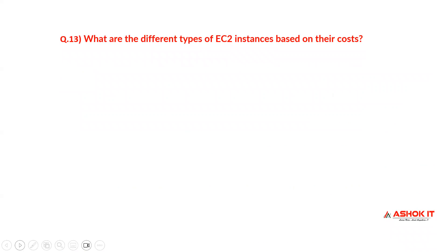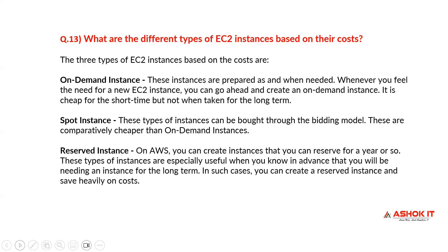What are the different types of EC2 instances based on their cost? There are different types: on-demand instances, spot instances, and reserved instances. On-demand instances are provisioned as and when we need them. Whenever you need a new EC2 instance, you can go ahead and create an on-demand instance. It is cheap for the short term, but not when taken for the long term.